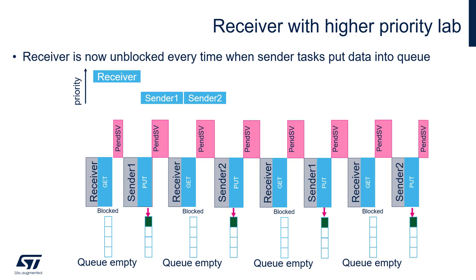What would happen if the receiver has higher priority than the senders? Let's analyze the situation. Receiver is executed first as the highest priority task and is blocked because the queue is empty. Then sender1 sends some data to the queue, which unblocks the receiver task. The receiver continues execution as the highest priority task, and in its next iteration of the endless loop it is blocked again waiting for data, which is now empty. After this, sender2 is selected by the scheduler and sends data to the queue. Receiver is immediately woken up, moves from blocked to run state, reads the data, and is blocked again. The situation repeats: sender1 sends data, wakes up receiver, receiver is blocked again, then sender1 is selected, sends data, and so on.